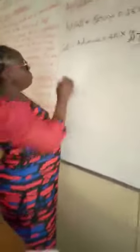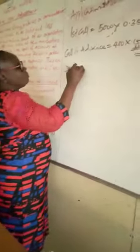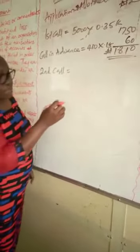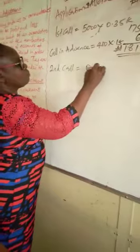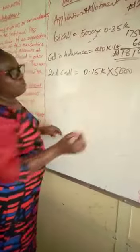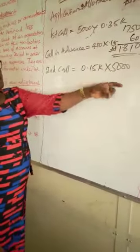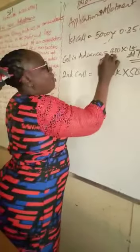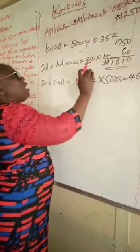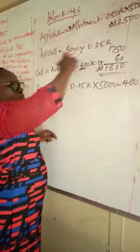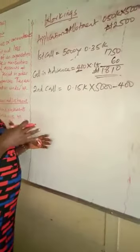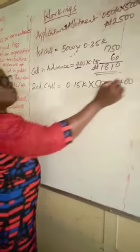So second call, they were to pay 15 cover. This 15 cover was supposed to be paid on 5000, but don't forget a holder of 400 had already paid his own final call with first call. Maybe he feels that how much is 69 that I will go to the bank again to pay? Let me add it together. So you have to subtract.